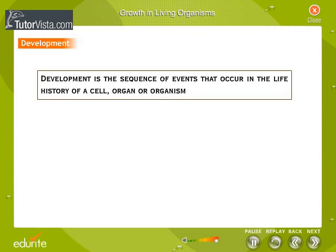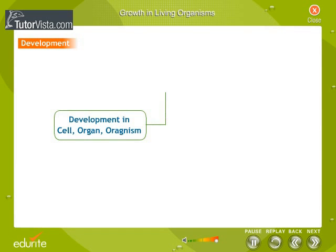Besides growth and differentiation, an organism also undergoes development. Development is the sequence of events that occur in the life history of a cell, organ or organism, which includes growth, differentiation, maturation and senescence, the sequence of which is shown in the diagrammatic representation.